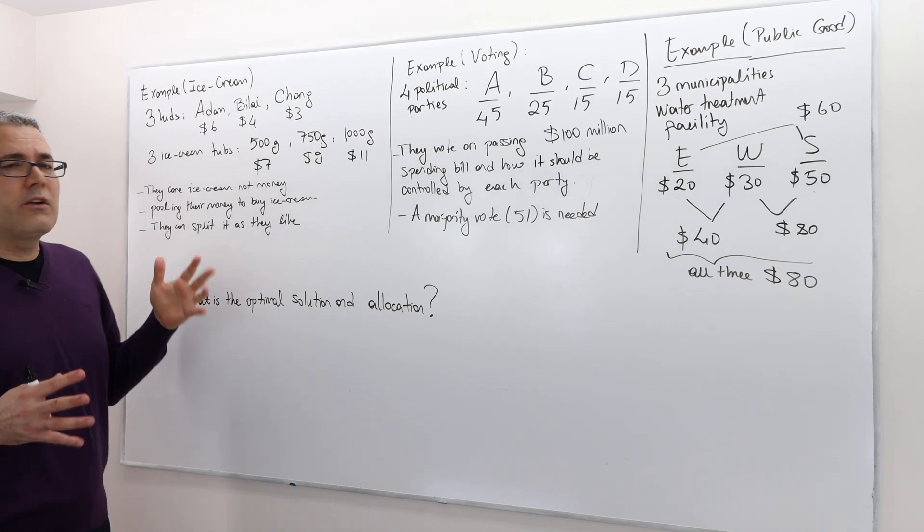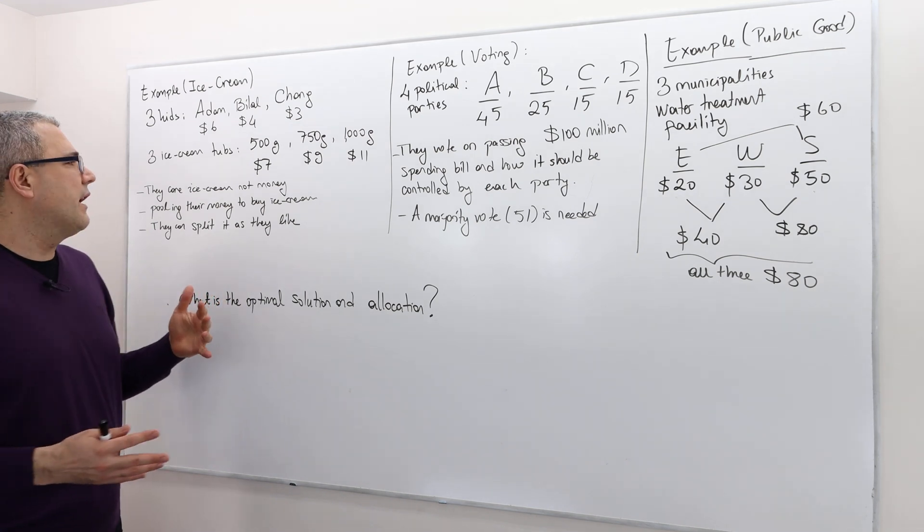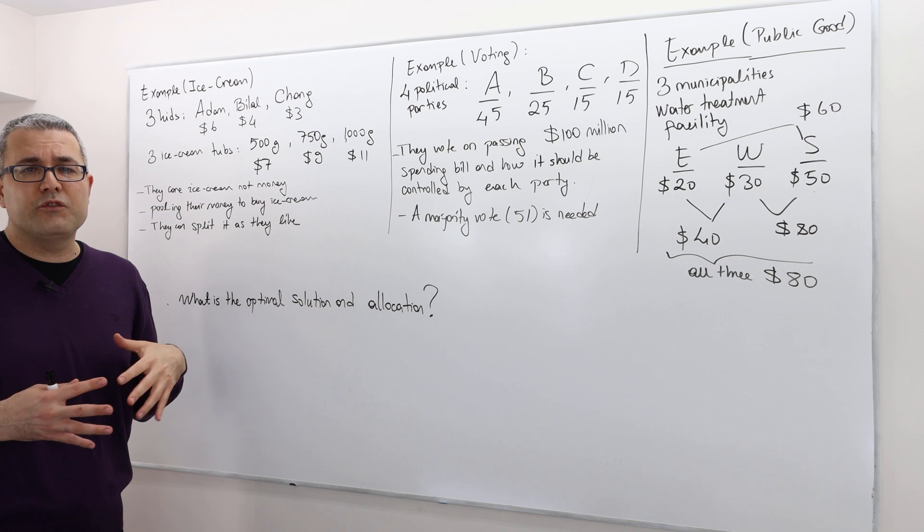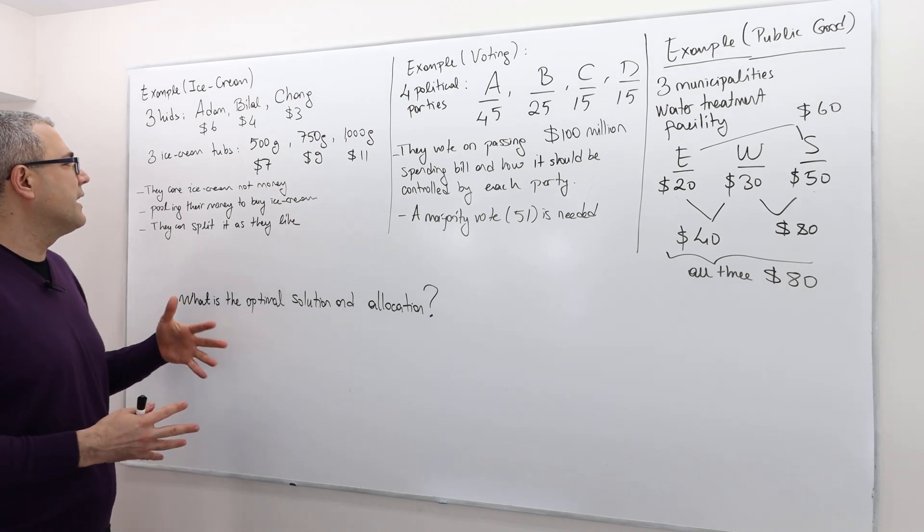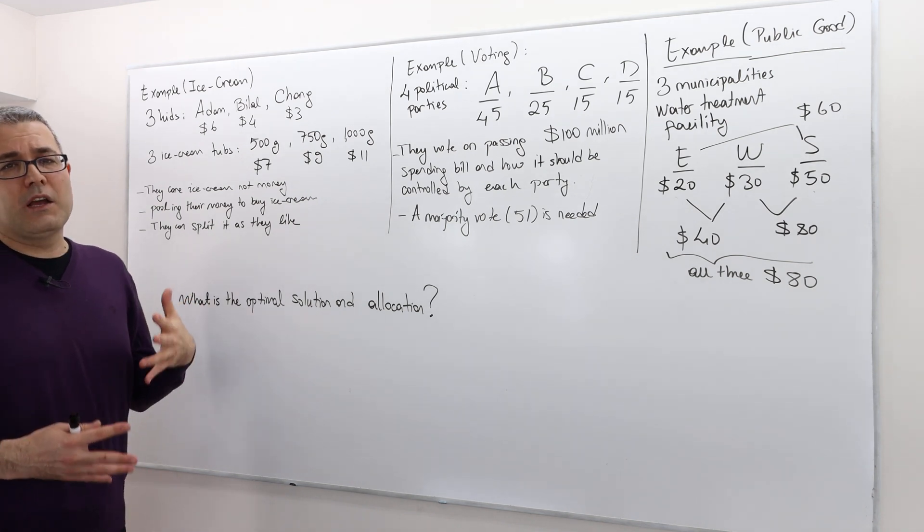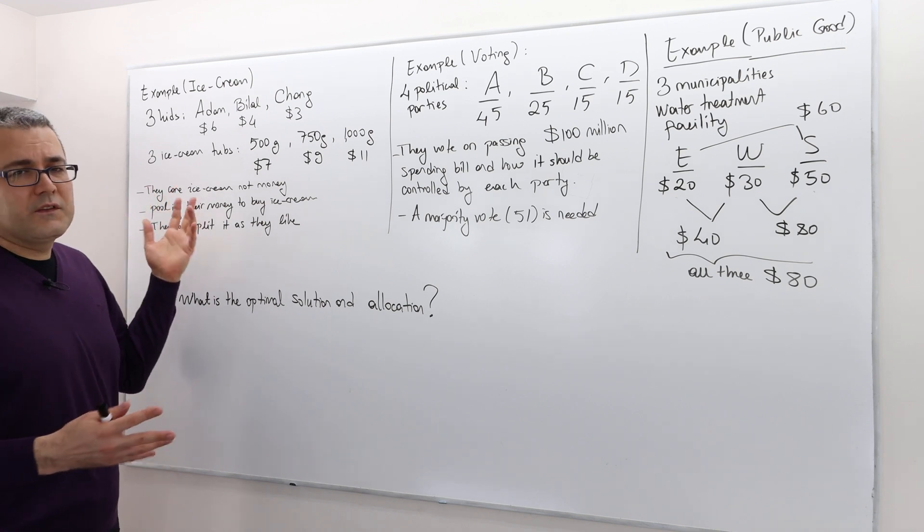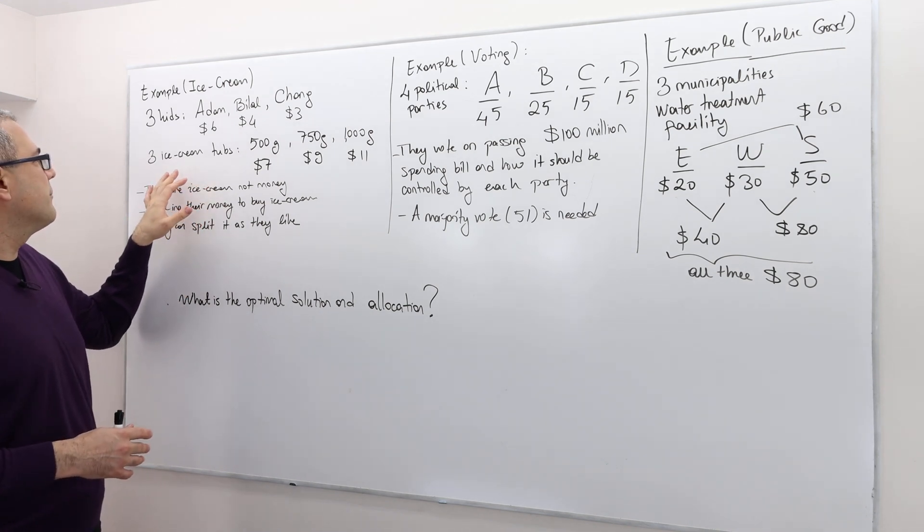All right. Well, they don't care about the money they have, but they would like to consume as much ice cream as they can. So they would like to buy ice cream with that money. Otherwise money is irrelevant for them.